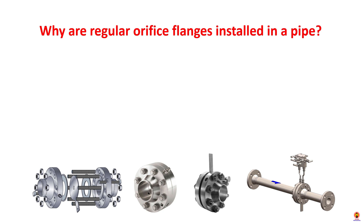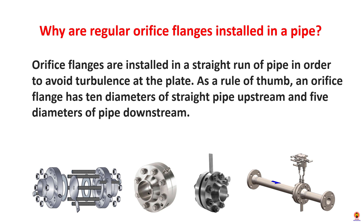Orifice flanges are installed in a straight line of pipe in order to avoid turbulence at the plate. As a rule of thumb, an orifice flange has 10 diameters of straight pipe upstream and 5 diameters of pipe downstream.